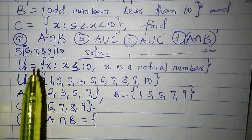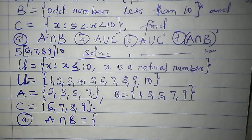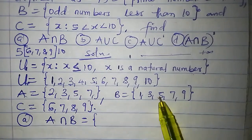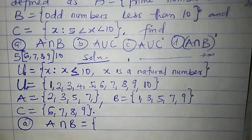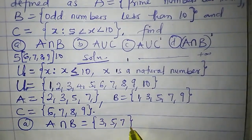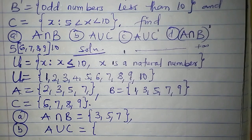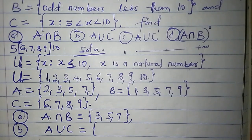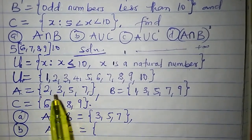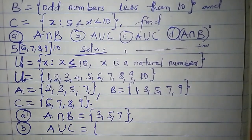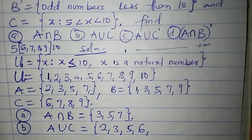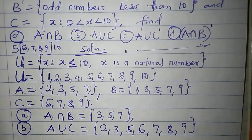Let us answer the questions. A intersection B: intersection means we look for elements common to both A and B. 3 is in both, 5 is in both, 7 is also in both. So A intersection B is {3, 5, 7}. For A union C, we combine the elements in A and C without repetition. A has 2, 3, 5, 7 and C has 6, 7, 8, 9. Combining everything, A union C is {2, 3, 5, 6, 7, 8, 9}.